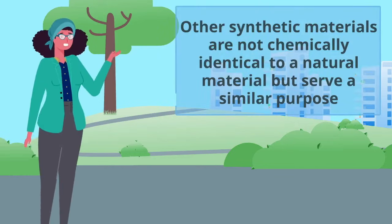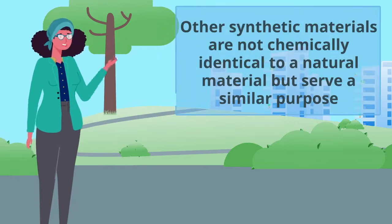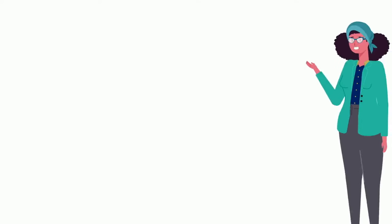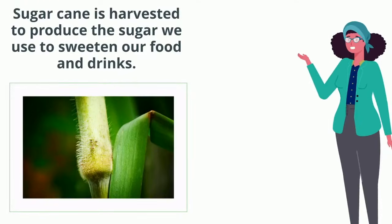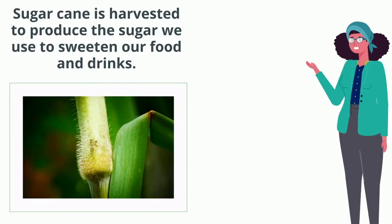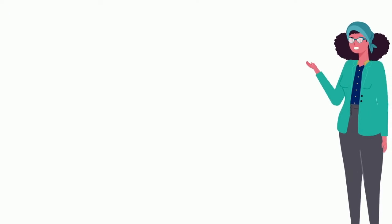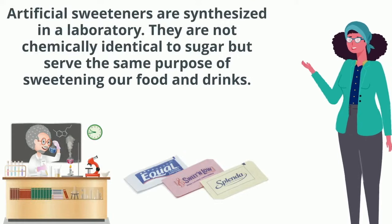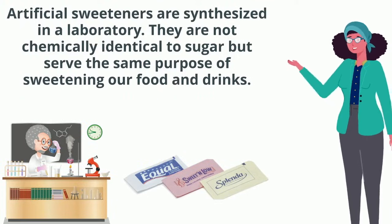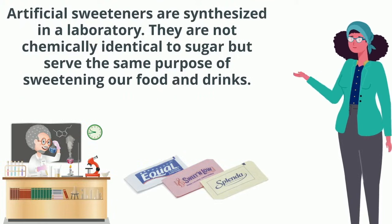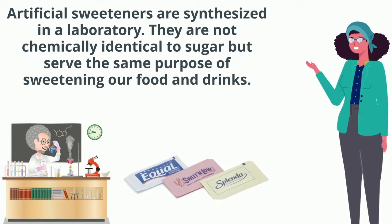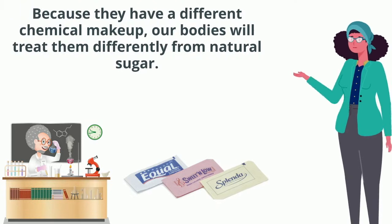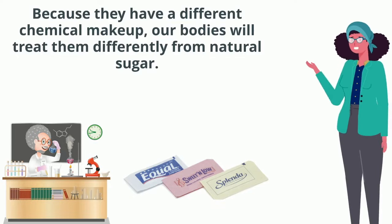Other synthetic materials are not chemically identical to a natural material, but serve a similar purpose. Sugar cane is harvested to produce the sugar we use to sweeten our food and drinks. Artificial sweeteners are synthesized in a laboratory. They are not chemically identical to sugar, but serve the same purpose of sweetening our food and drinks. Because they have a different chemical makeup, our bodies will treat them differently from natural sugar.